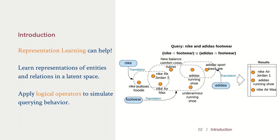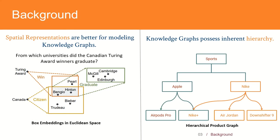An approach towards more efficient querying is to learn representations of the different entities and relations in a latent space, where algebraic operations could help us query the knowledge graph. For example, in the product search domain, a model could learn to translate the product categories Nike, Adidas, and Footwear to the latent space, and we can now use thresholds around them to query results from logical operations. One variation of this approach is Query to Box, where the authors aim to learn box representations for logical queries. As we can observe in the figure, this introduces a spatial parameter which is able to increase the precision compared to fixed thresholds over vectors.